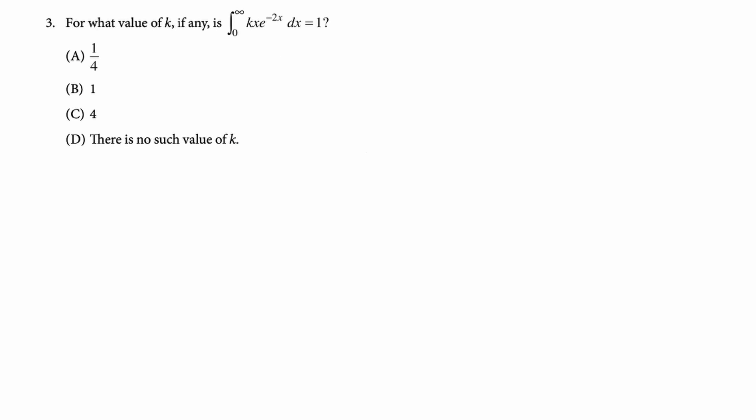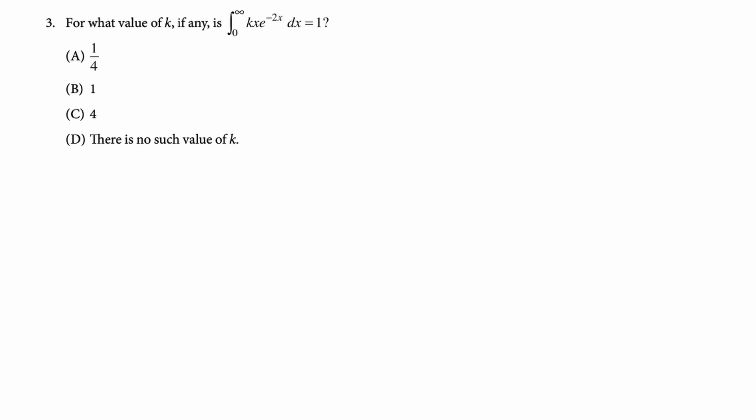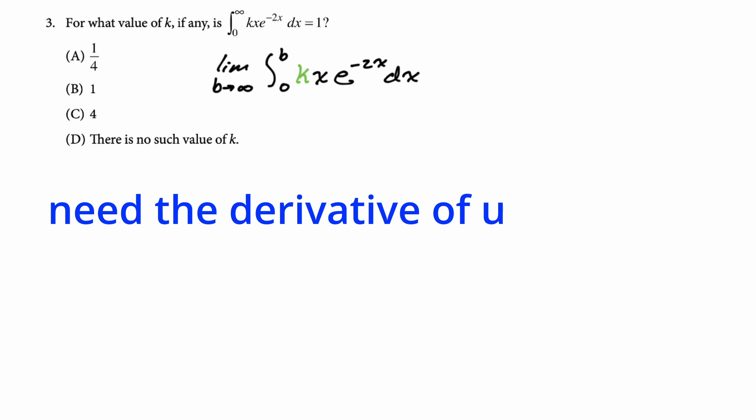Number three. For what value of k if any is the integral from zero to infinity of kx e to the negative 2x dx equal to 1? All right. So I look at this and I think immediately this is an improper integral. So we have to use the correct notation if this is open-ended. It's not so it doesn't really matter but I'm still going to do it. So that is we have to use the limit as b approaches infinity the integral from zero to b of kx e to the negative 2x dx. We're going to have to evaluate this. You look at that and you think this is integration by parts. I'm going to just factor the k out and not worry about it.